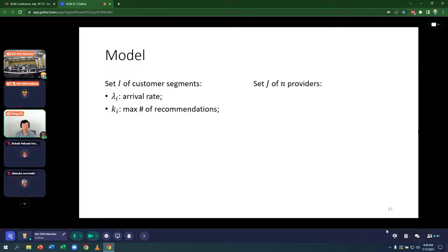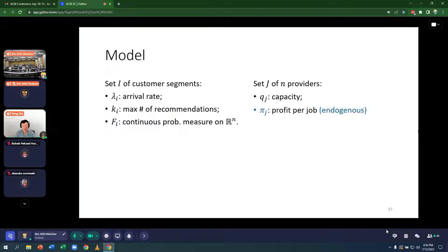We have K_i, which is the maximum number of recommendations for this segment. So for Home Advisor for the segment of people who want kitchen remodels with no floor plan change, maybe K is four. There's a distribution F, which is a continuous probability measure on R^N, where N is the number of providers. For each provider J, we have a capacity, which is the maximum number of customers they can serve on average per month.